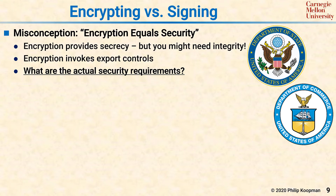Good encryption invokes export controls. If you want to ship a piece of equipment and you're in the US and you want to ship it out of the US, if you have advanced technology, you are subject to export controls by the Department of Commerce or by the Department of State. There's a huge amount of paperwork and pain you might have to go through, depending on the specifics of your situation. That's gotten better over the years, but it's still an issue you need to deal with.